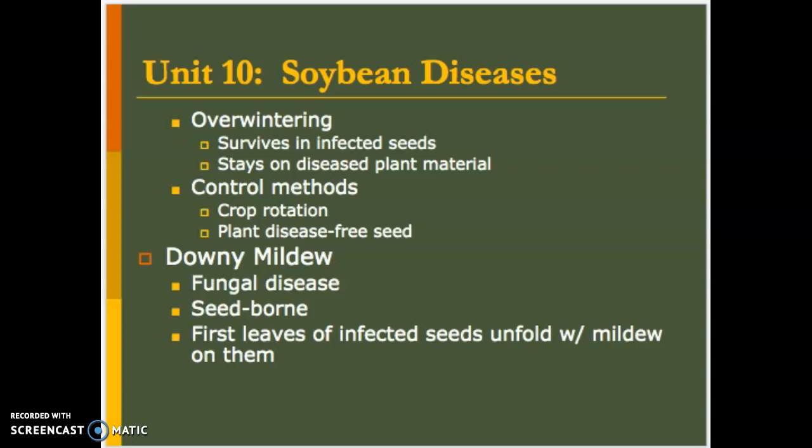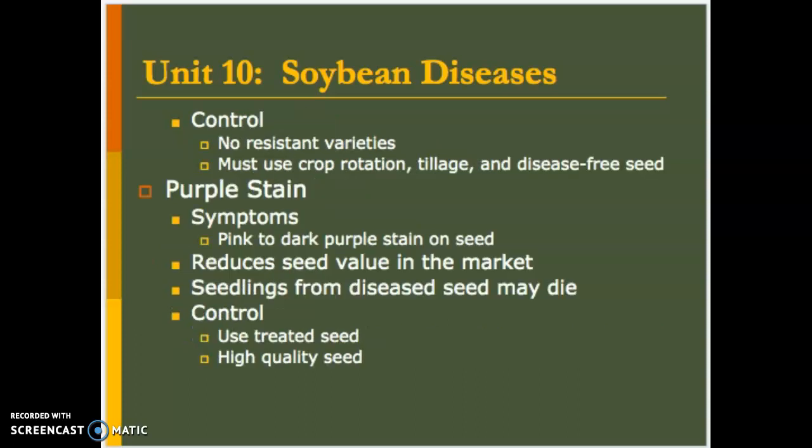Downy mildew is much more common in the area — another fungal, seed-borne disease. The first leaves are infected kind of as they unfold, with mildew right on them. It's a very odd one, but once you've seen it you can pick it out — a newly unfurled leaf should not have a mold on it. Control: there are really no resistant varieties, so crop rotation, tillage, and buying good disease-free seed usually takes care of this one.